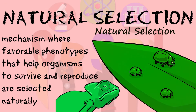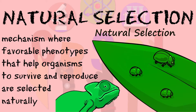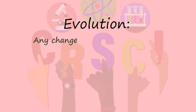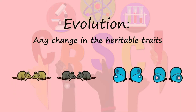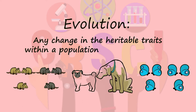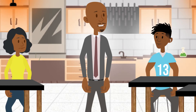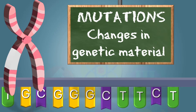Natural selection is one mechanism or way that brings about the evolution of organisms — a change in heritable traits within a population across generations. Now, unlike you being able to choose your jersey, that change in the trait would have been a random mutation. Absolutely. So, another example.